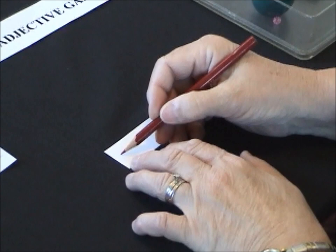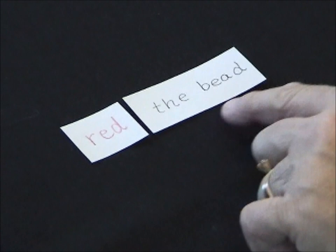So I'm going to write the label now, I want to have red. And I start to read again with the child, red, the bead, no we don't say that, the bead, red, no...